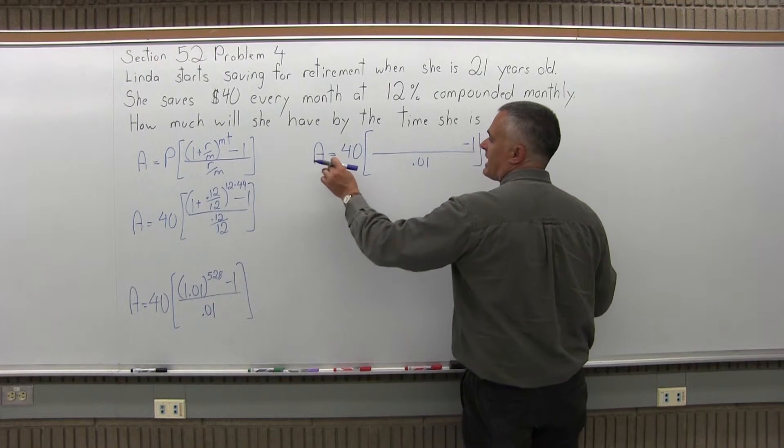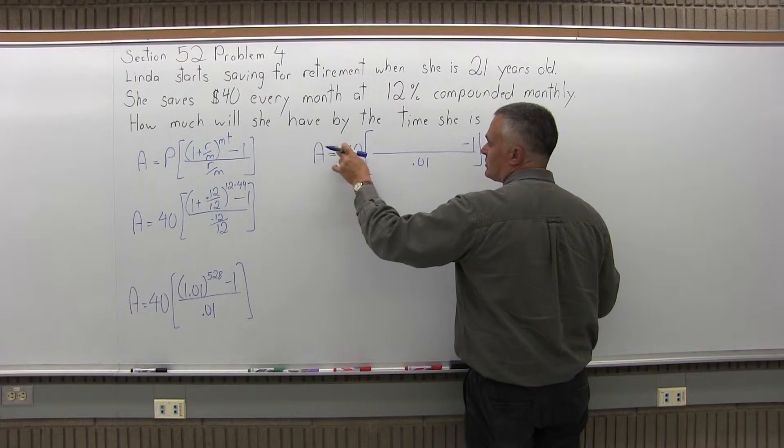So now in my brackets, I'm going to have A equals, overall in the formula, A equals 40 times in the brackets,